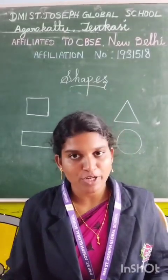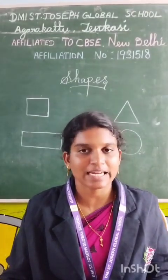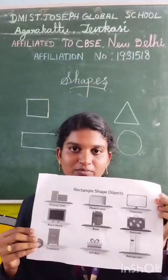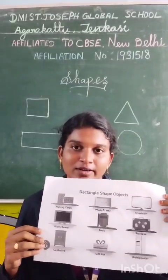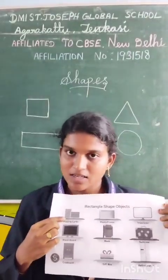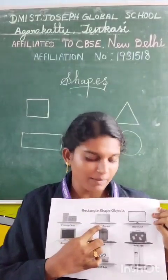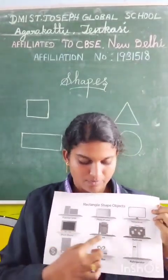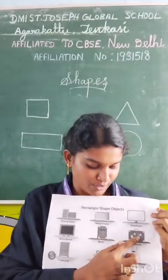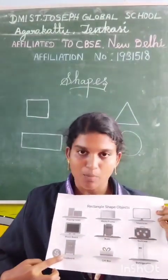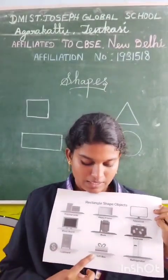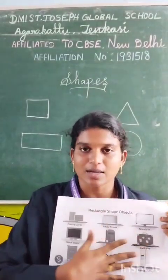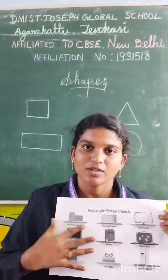Now I am going to show some examples of rectangle shape. These are the examples of rectangle shape. What are they? Playing cards, photo frame, television, blackboard, book, suitcase, cupboard, gift box, refrigerator. These are the examples of rectangle shape.